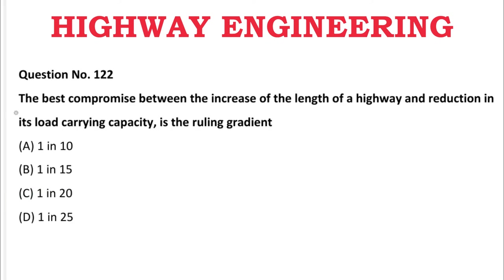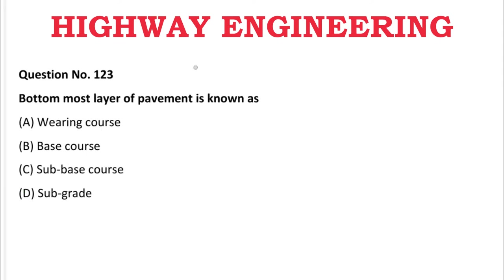Next question: The best compromise between the increase of length of highway and reduction in load-carrying capacity is the ruling gradient — A: 1 in 10, B: 1 in 15, C: 1 in 20, D: 1 in 25. The correct answer is C, 1 in 20.